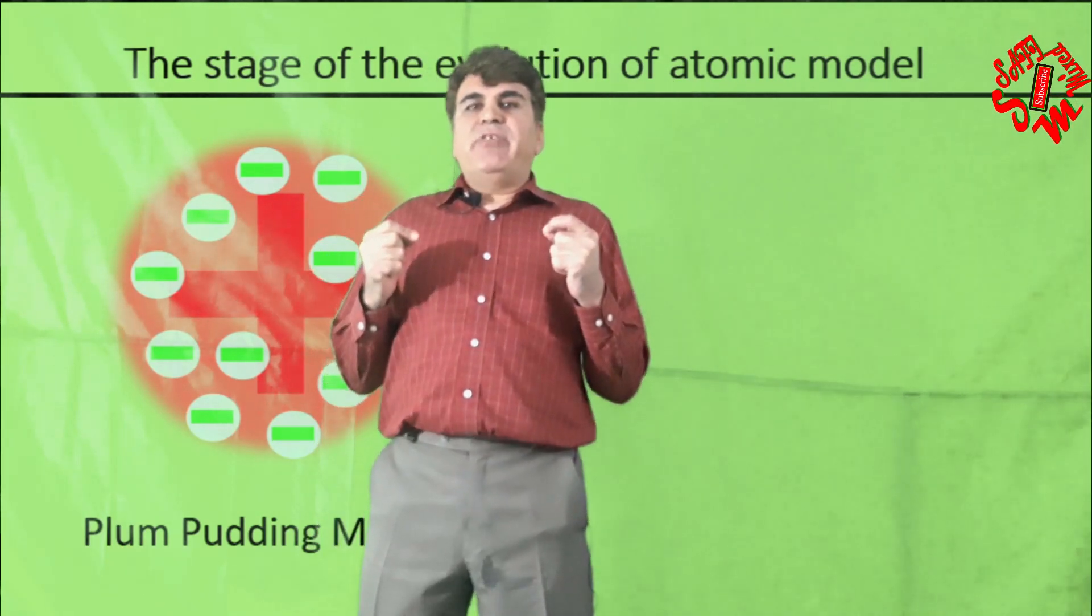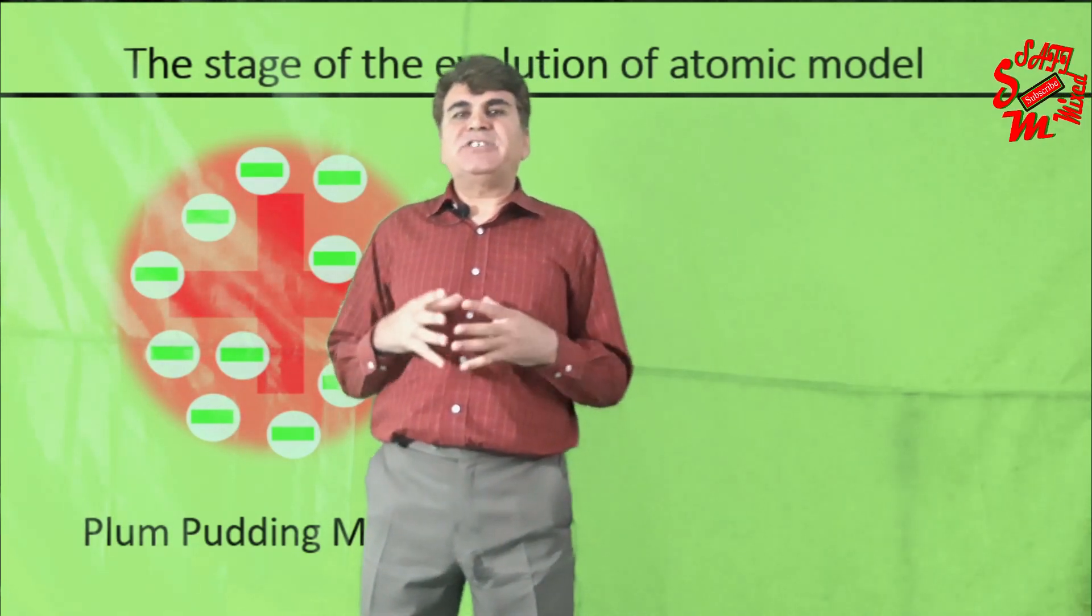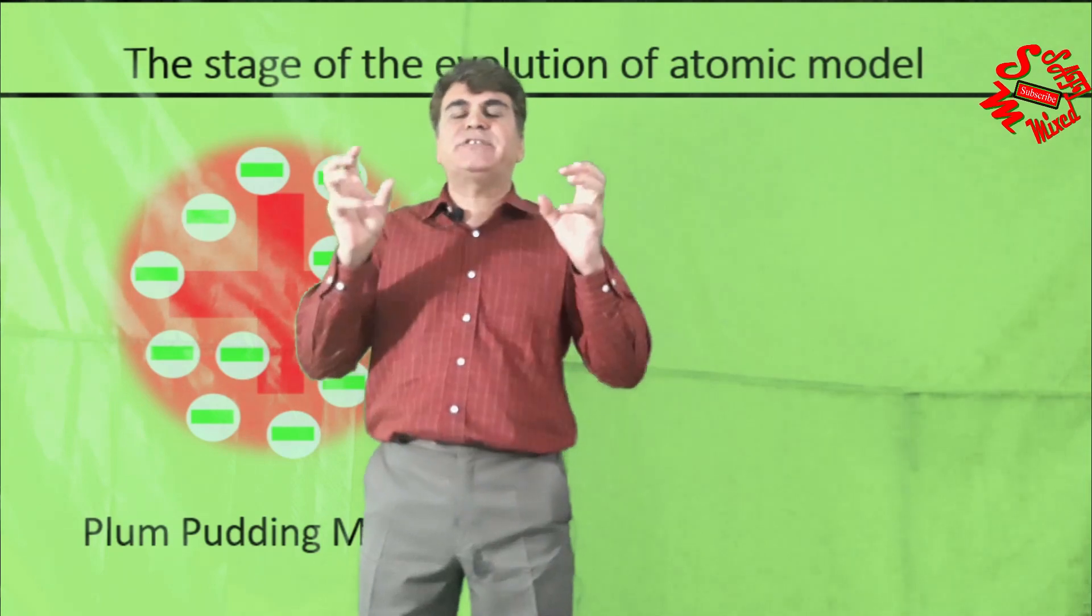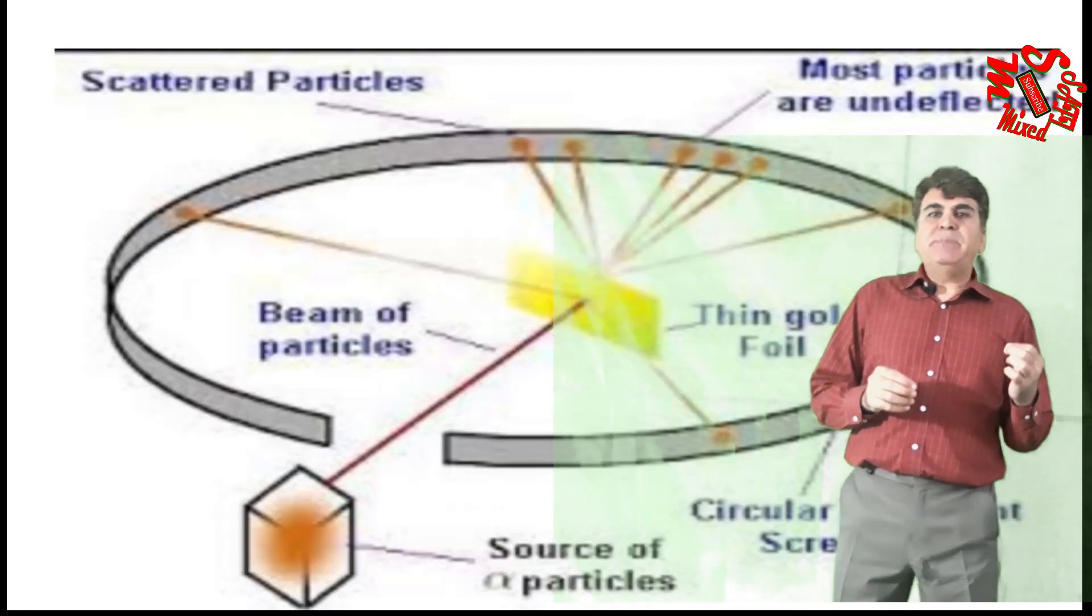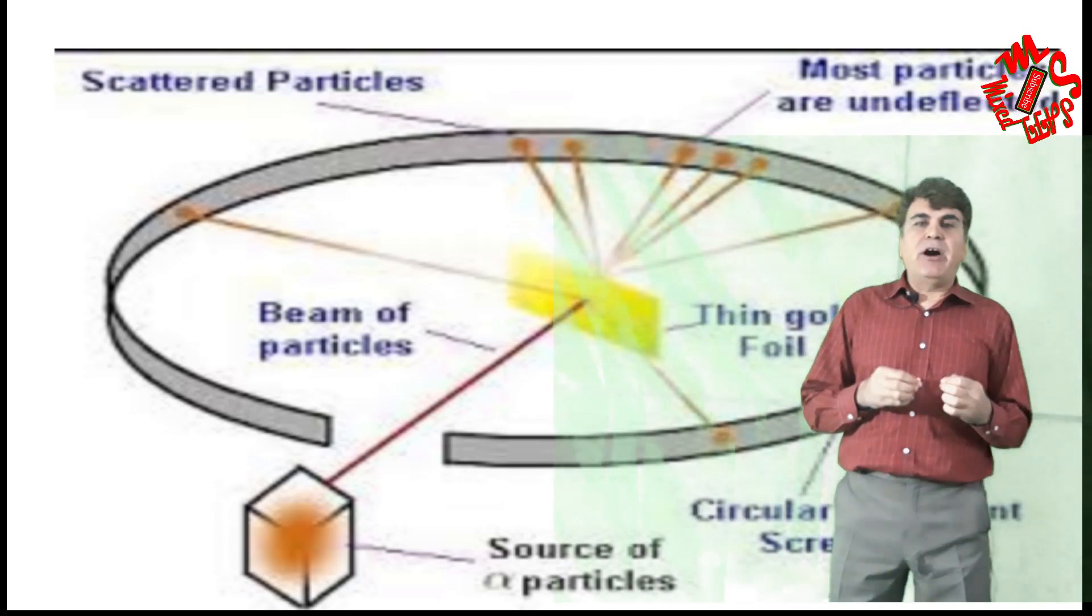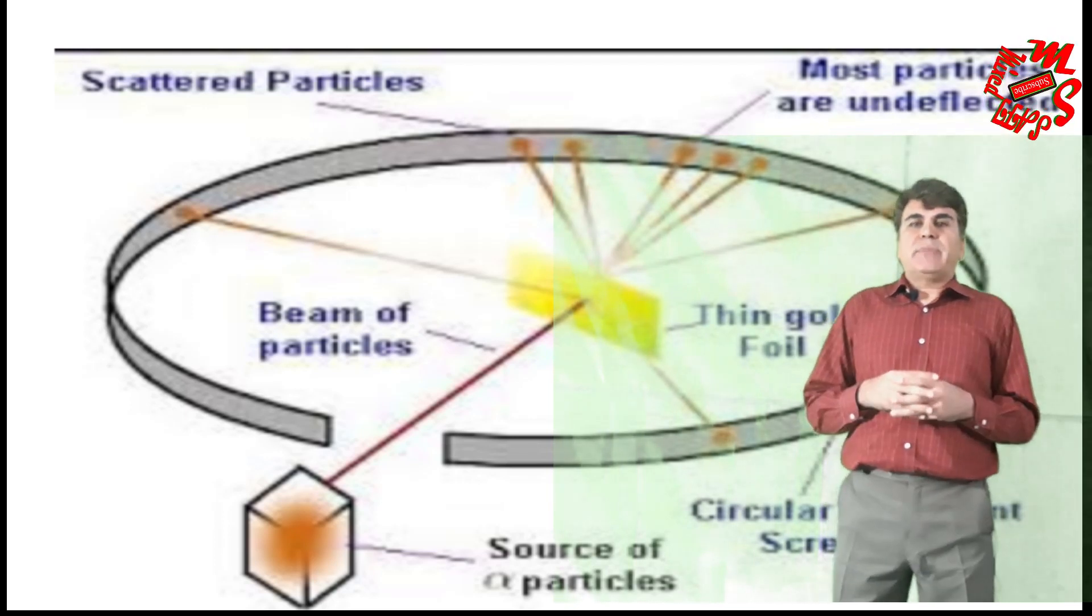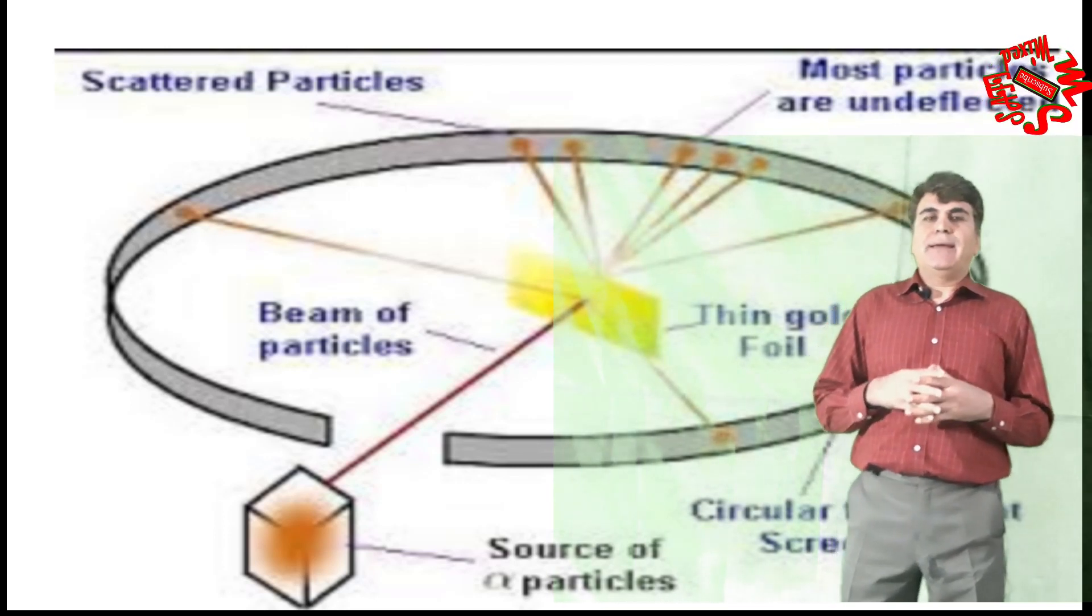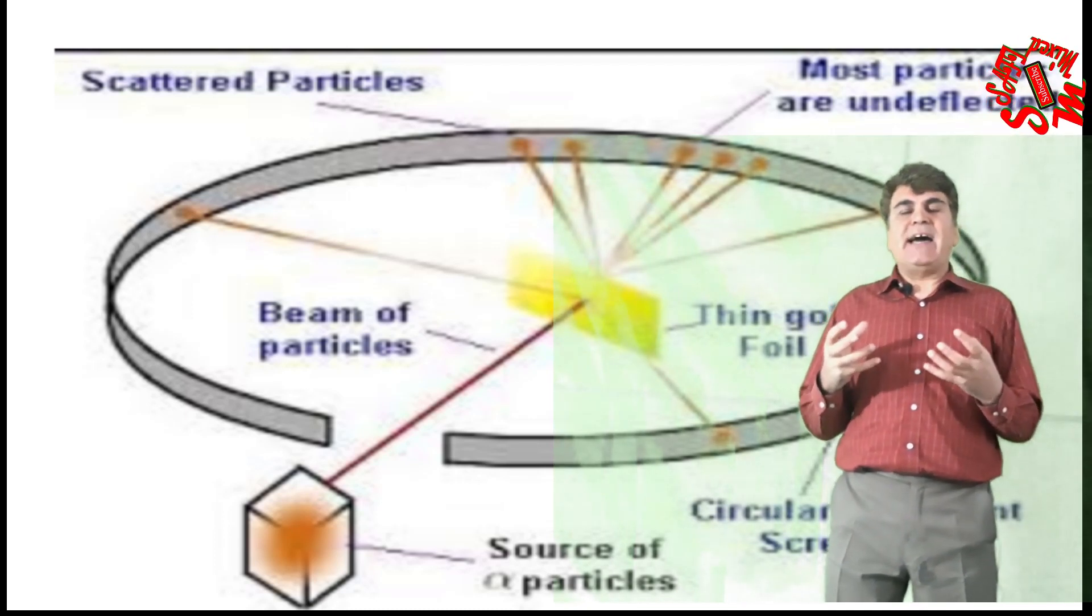The discovery of the phenomena of radioactivity by Henry Becquerel and the following work by Marie Curie and her husband Pierre Curie paved the path for bringing another model somewhat close to its actual real structure. The fall of a collimated beam of heavy radiation emitted from a radioactive material on metal foil, particularly gold foil, and its scattering through giant angles led to the forced molding of the plum pudding model into a new structure containing a positively charged core of very tiny size in 1911.